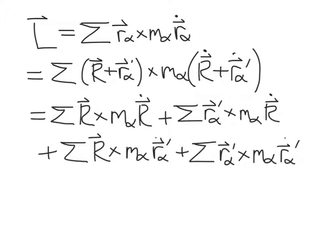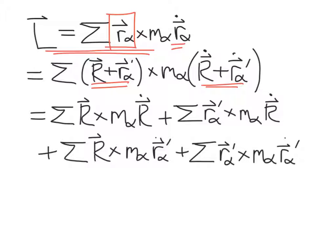Let's see how that works. Our total angular momentum for the system is this expression. We've defined the r_alpha vector as the position of the center of mass plus the position of particle alpha relative to the center of mass. Replacing r_alpha with this sum, r_alpha-dot becomes the time derivative of that sum. We then have the cross product of two sums, which gives us four different terms.